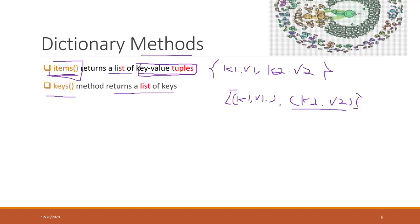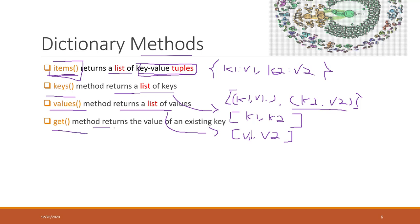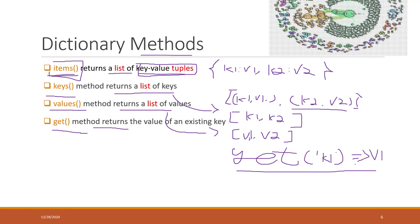The keys() method returns a list of all the keys — so you get [k1, k2]. The values() method returns a list of all the values — so you get [v1, v2]. You can also use the get() method, which returns the value of an existing key: calling .get('k1') returns v1, similar to accessing the key directly in square brackets.